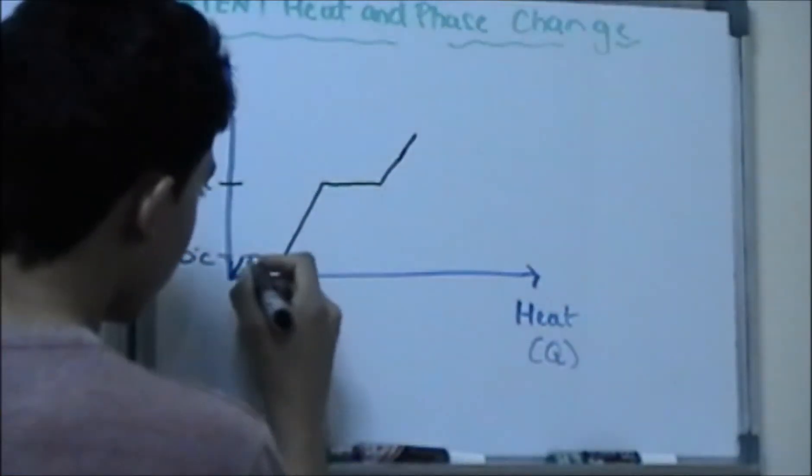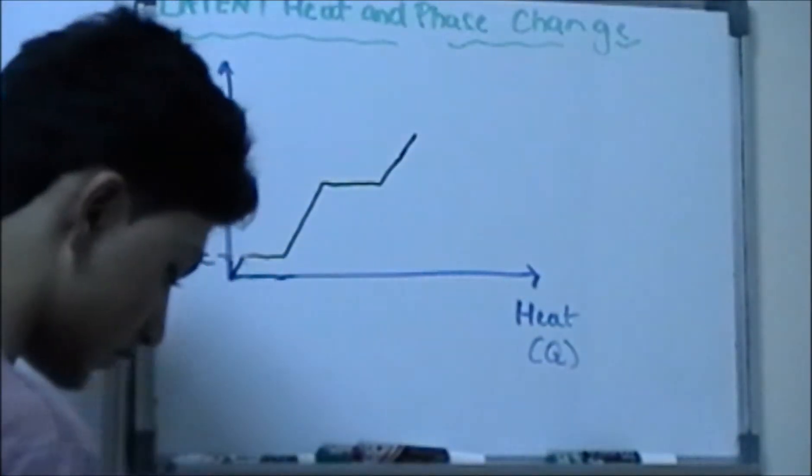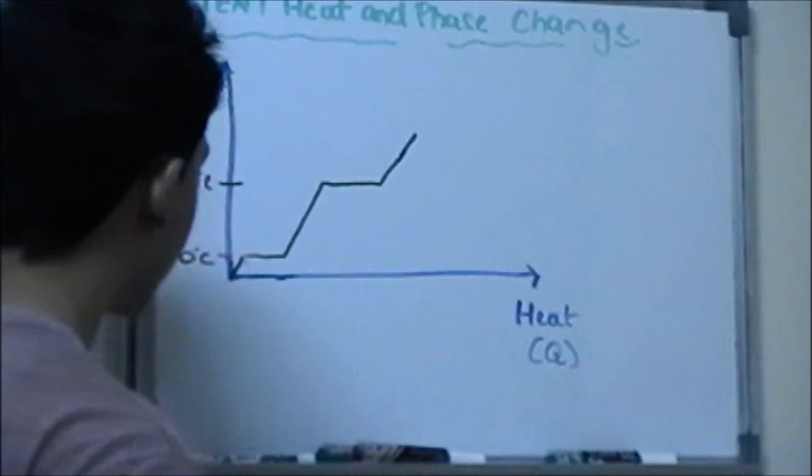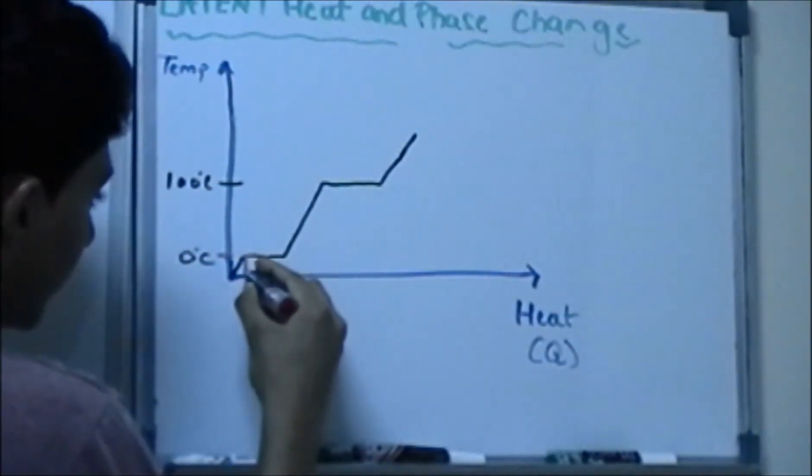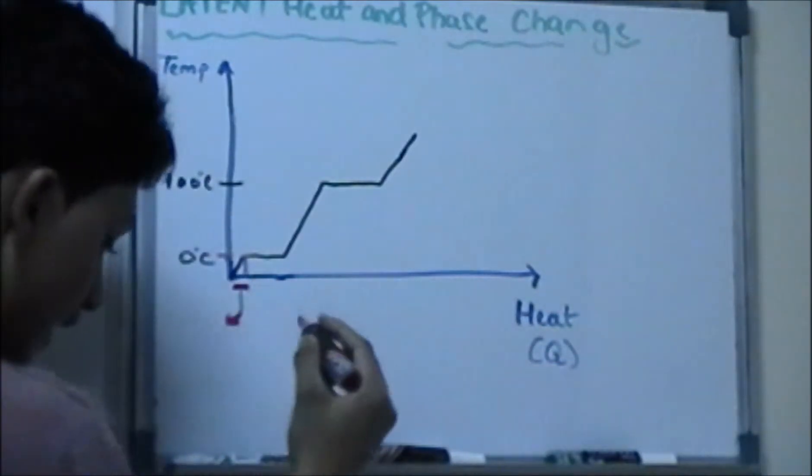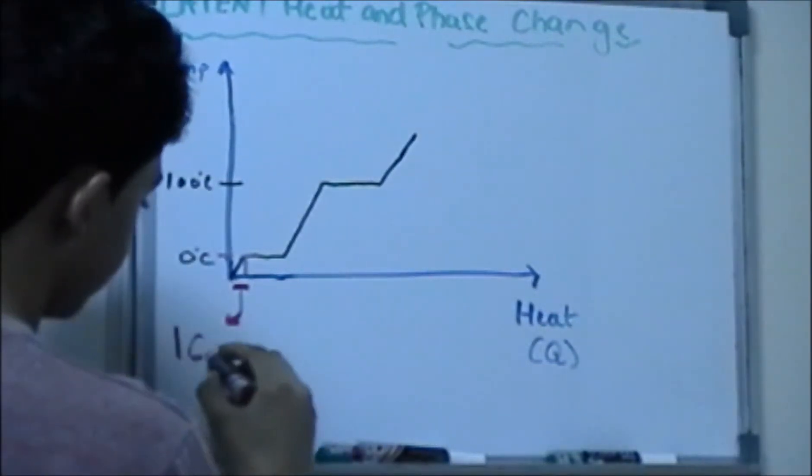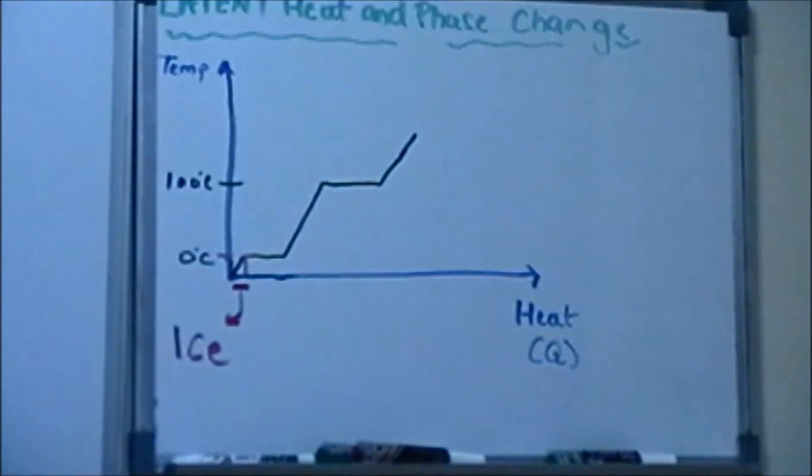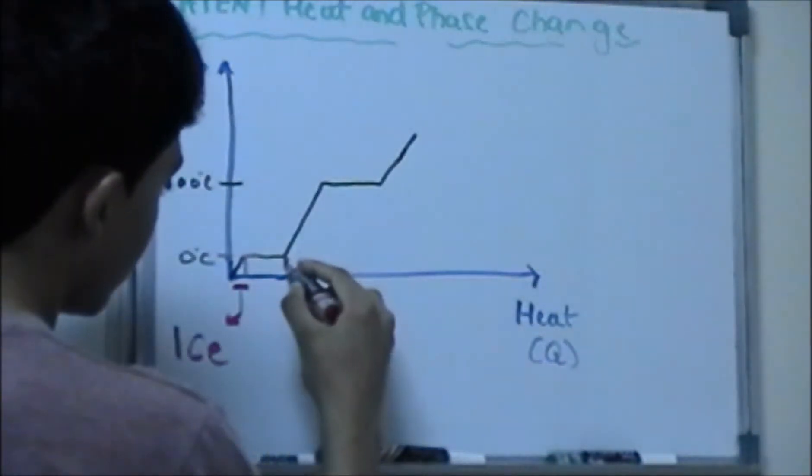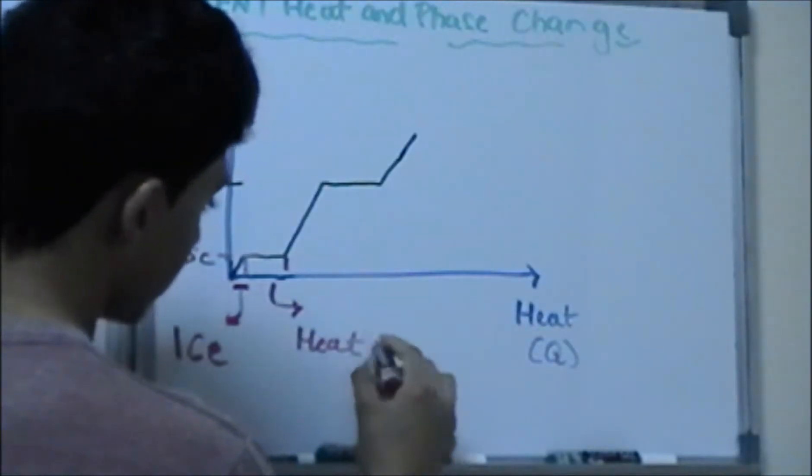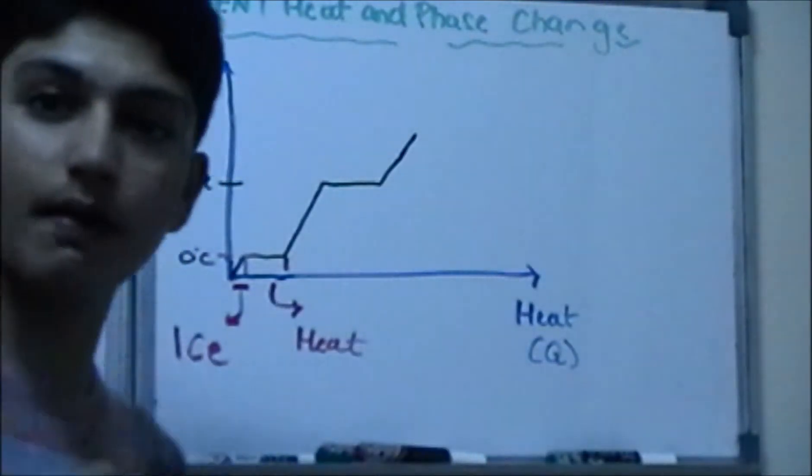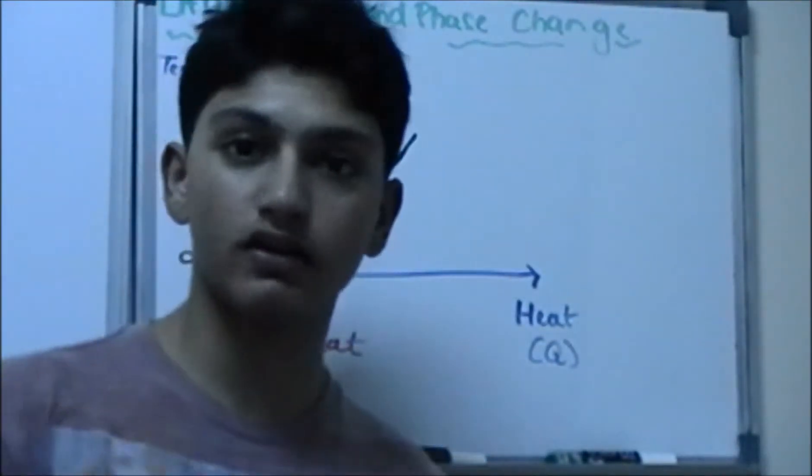So till this part over here, let me just use another color. So till this part over here as you guys can see clearly, this part over here is actually the ice. This part is basically where it's trying to heat the ice. So at some temperature the ice melts. We all agree to that.